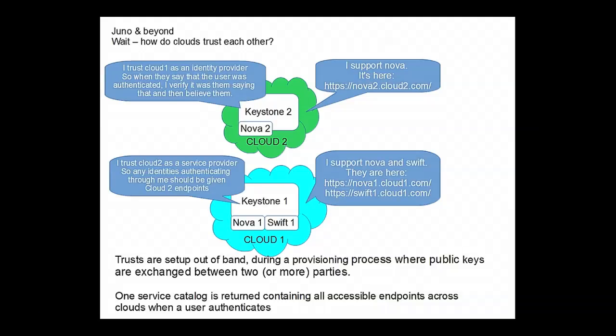How do clouds trust each other? It's important that clouds indicate what they support — a Nova instance, the Swift API — so you can build a service catalog representing the total scope of what an identity can do across these clouds. It's also important to set up explicit trust. There's trust as an identity provider from one cloud to another, and trust as a service provider. Cloud one trusts cloud two as a service provider, so identities authenticating can be given endpoints surfaced by cloud two. Cloud two trusts cloud one as an identity provider, so when a token comes across, it knows where to go back to and trust that as a solid originating identity provider.